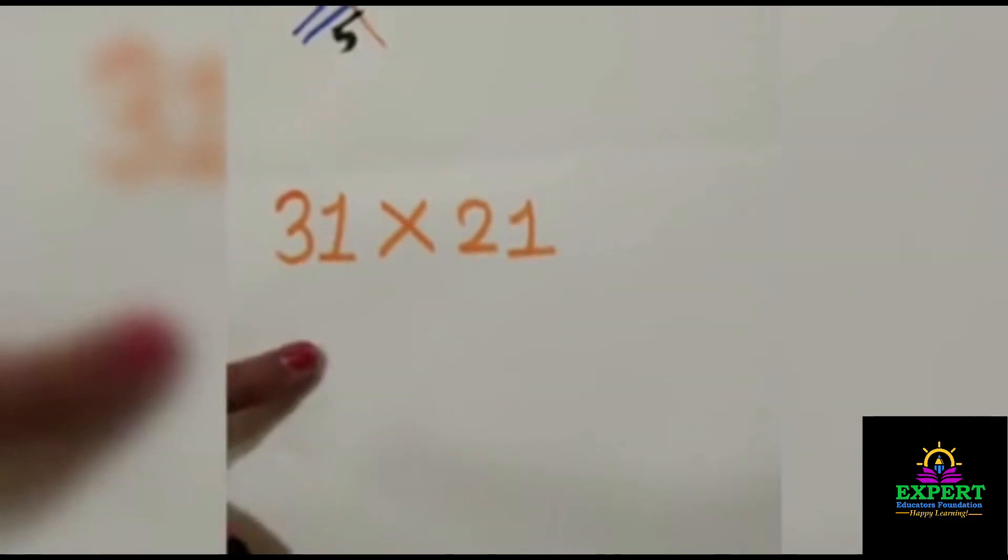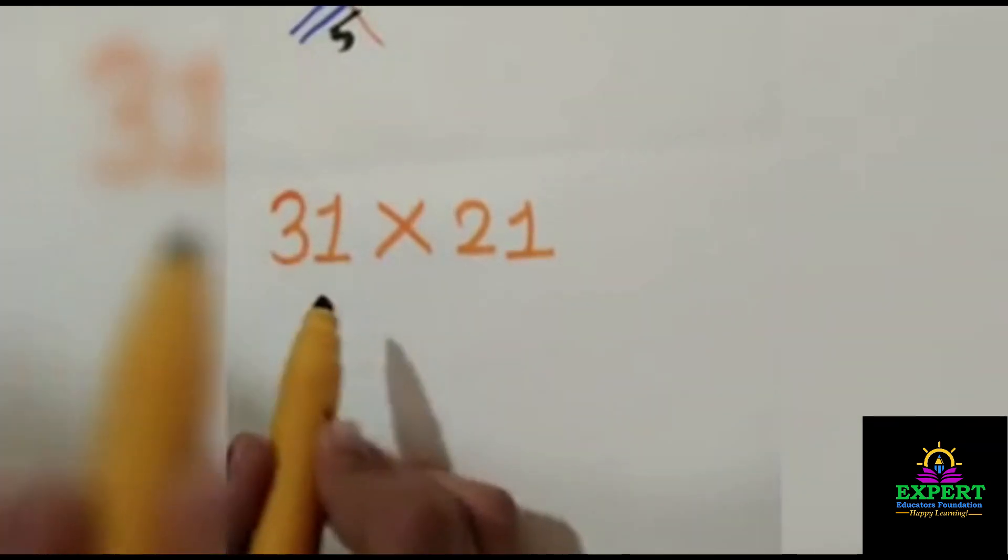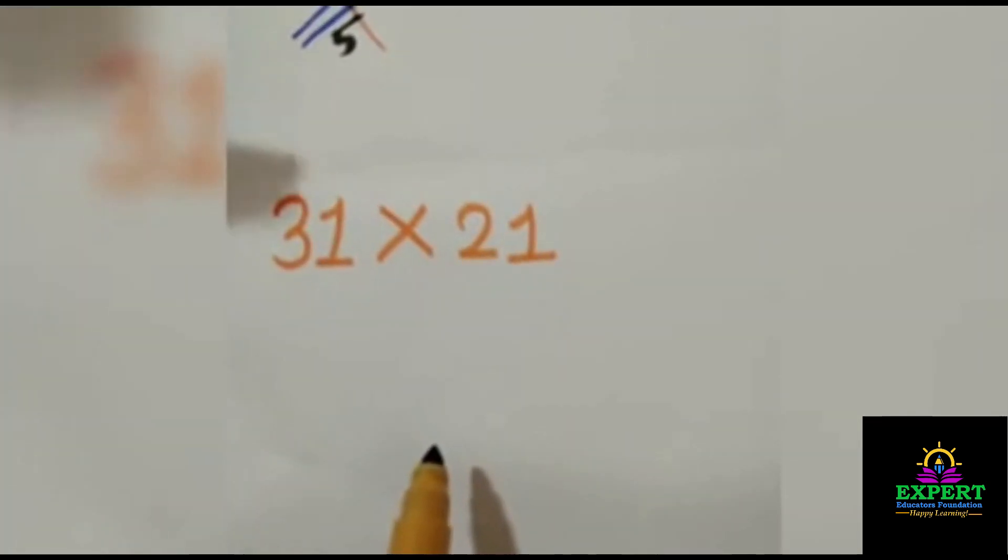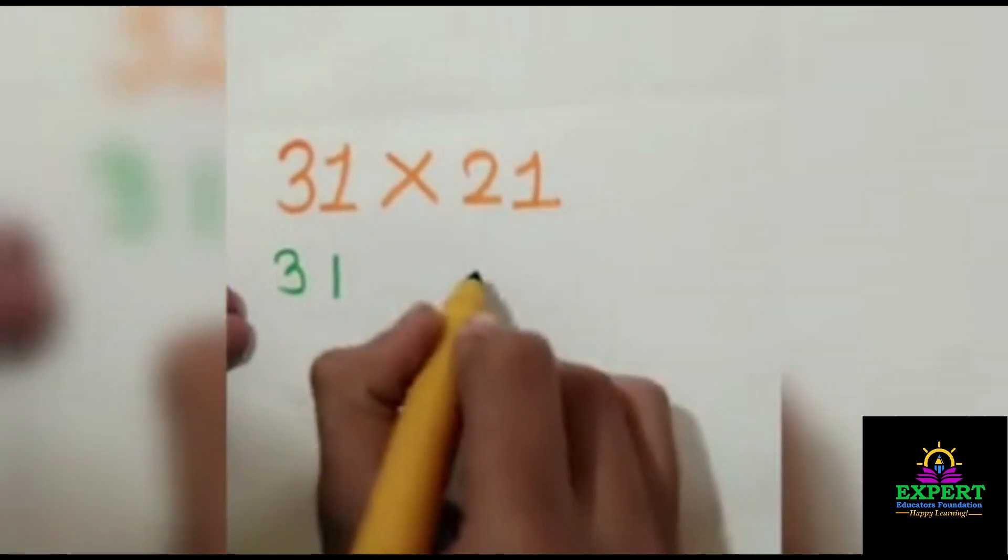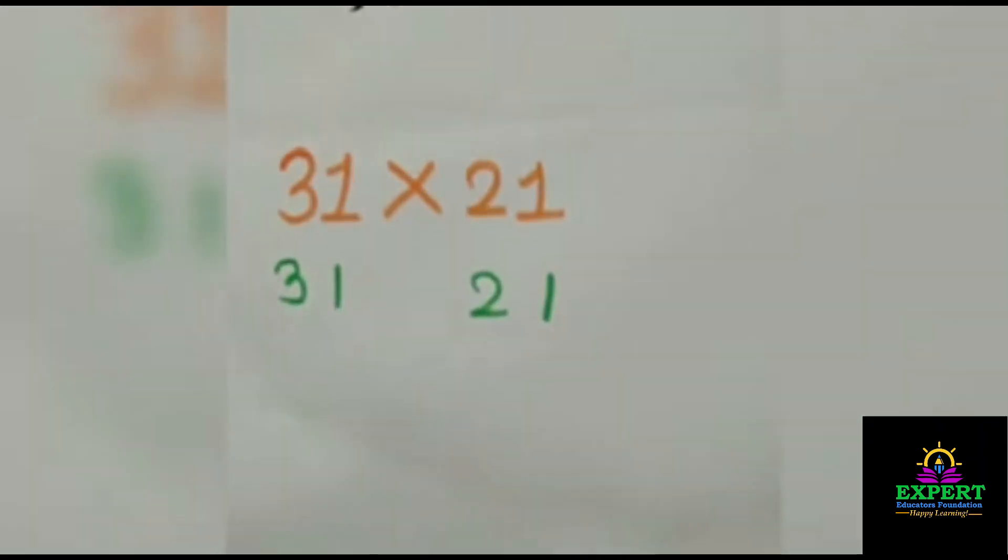Now let's take second number. So I have taken here 31 multiplied by 21. Same steps will follow as we have followed for first one. So let's separate the numbers: 3, 1, 2, and 1.